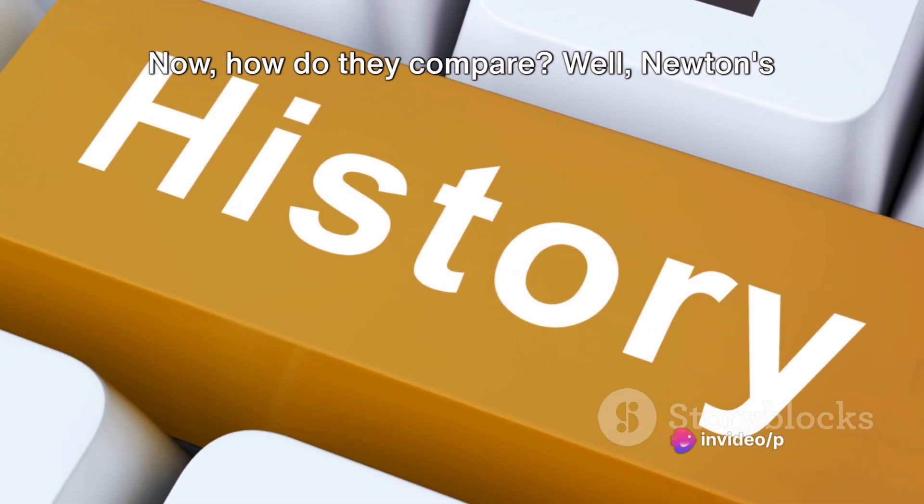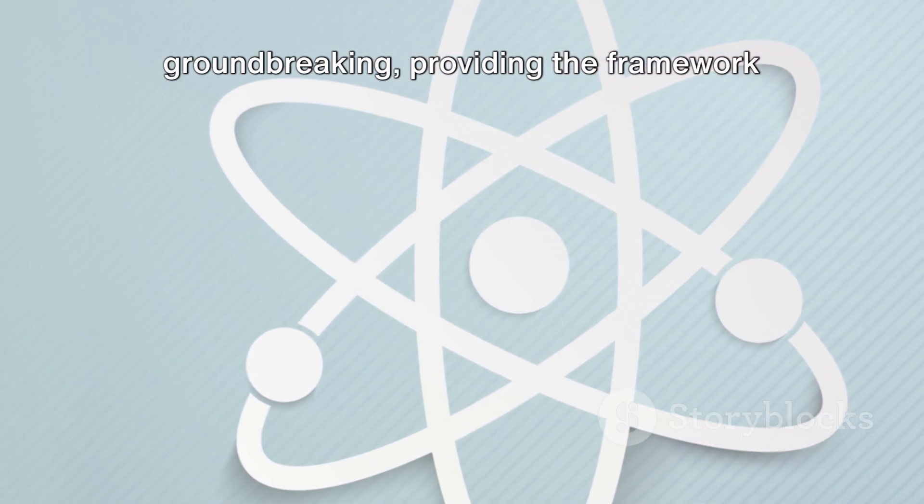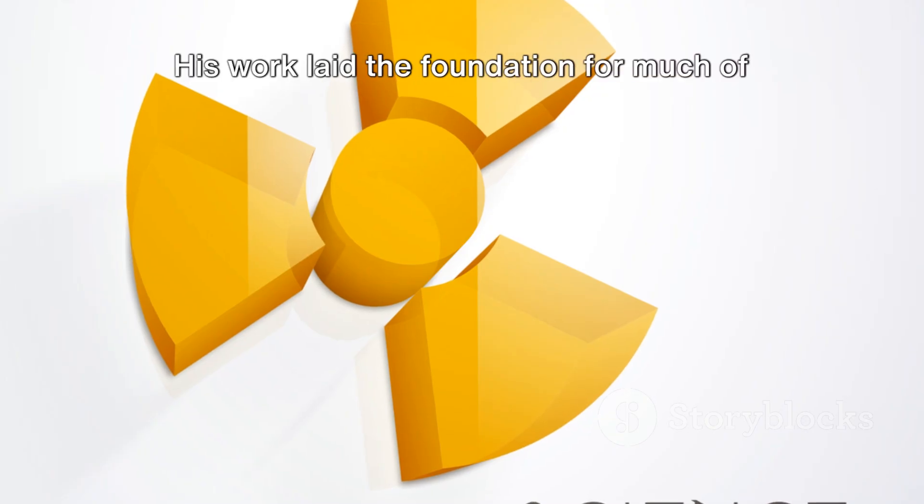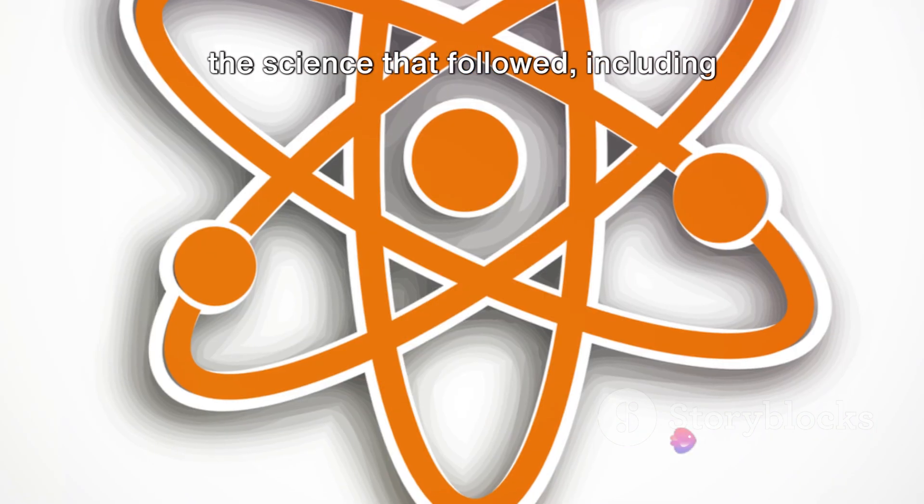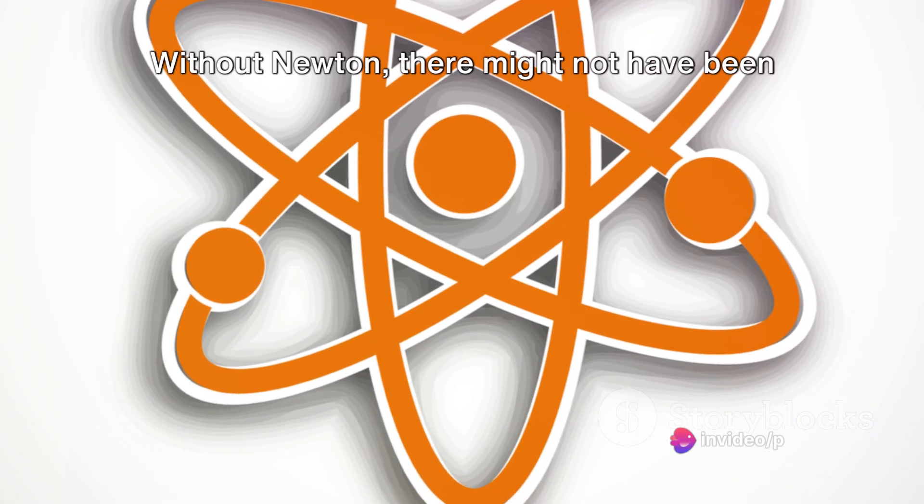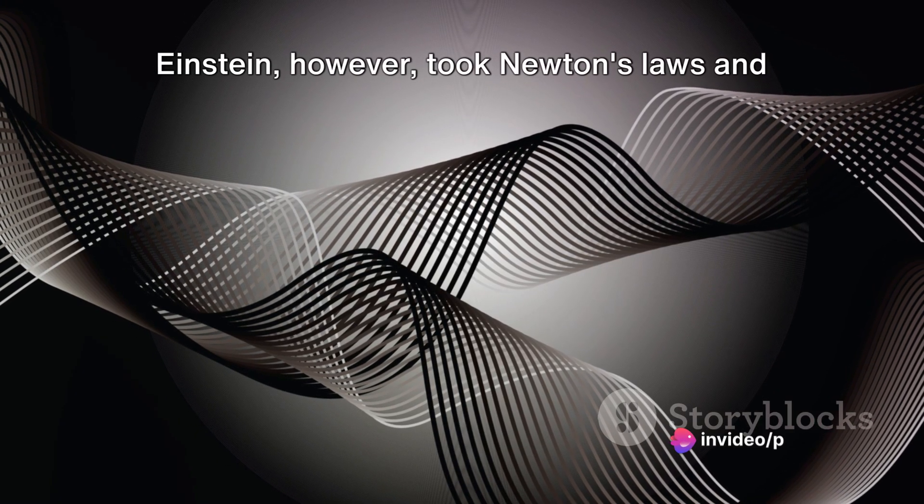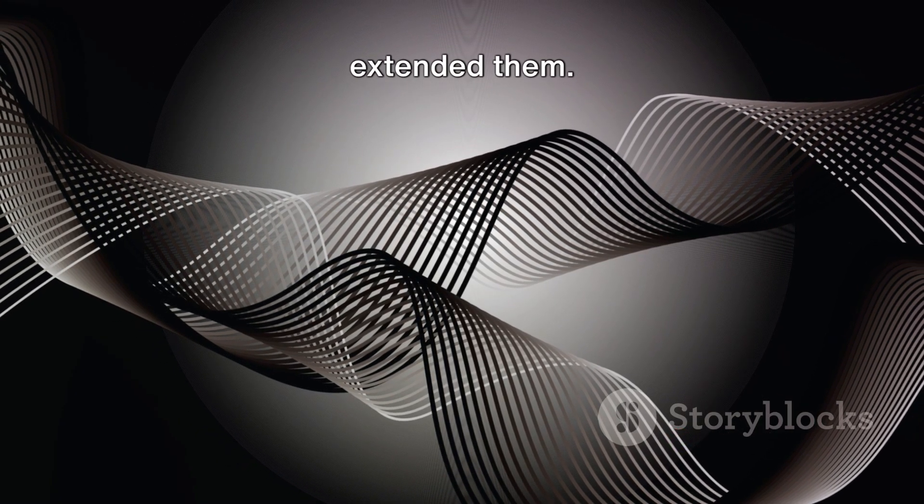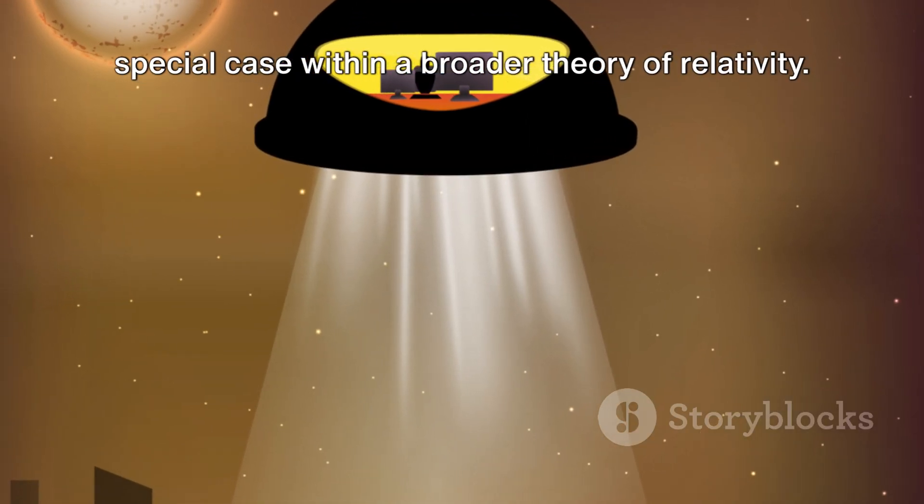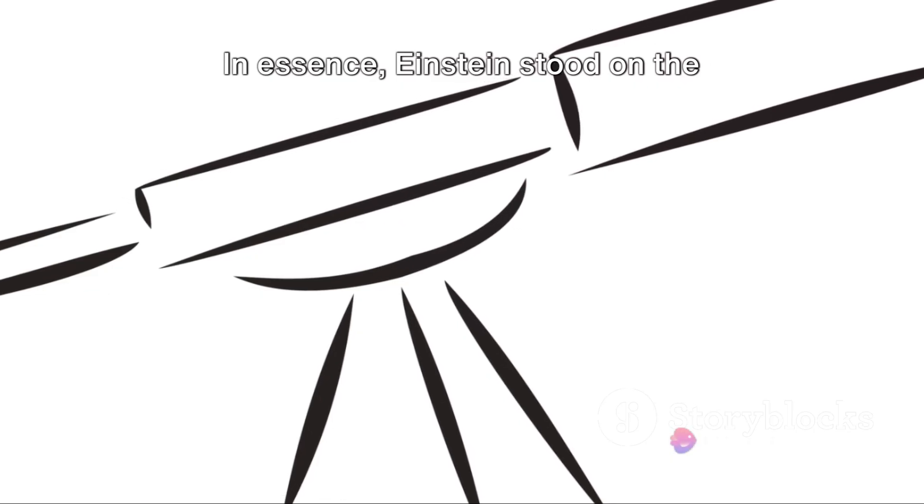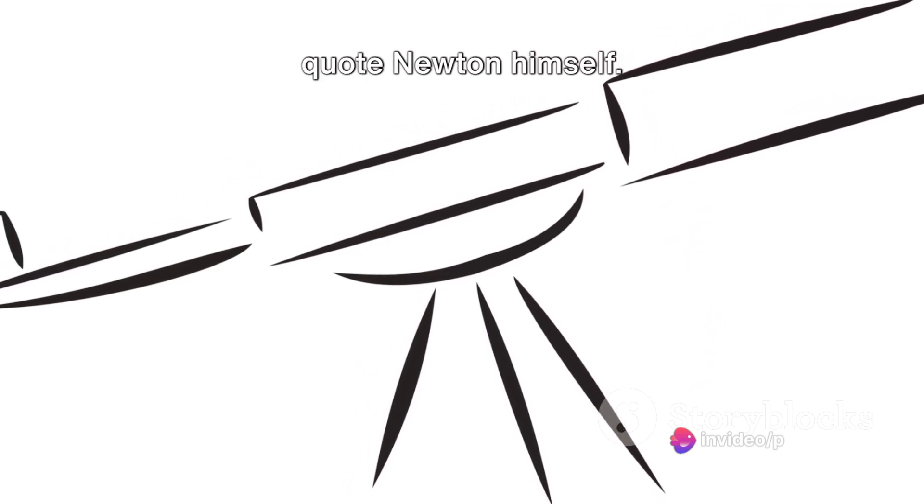Now, how do they compare? Well, Newton's laws of motion and gravitation were groundbreaking, providing the framework for classical physics. His work laid the foundation for much of the science that followed, including Einstein's own theories. Without Newton, there might not have been an Einstein. Einstein, however, took Newton's laws and extended them. He showed that Newton's laws were a special case within a broader theory of relativity. In essence, Einstein stood on the shoulders of Newton to see further, to quote Newton himself.